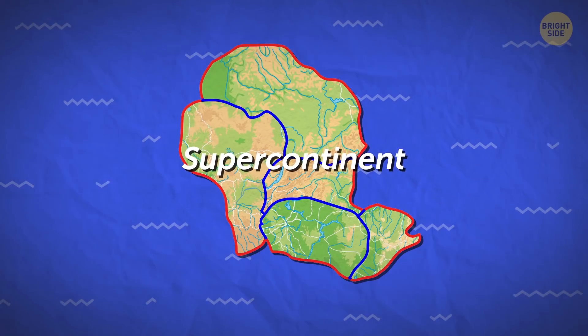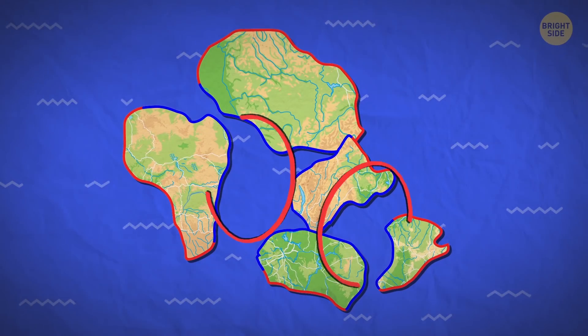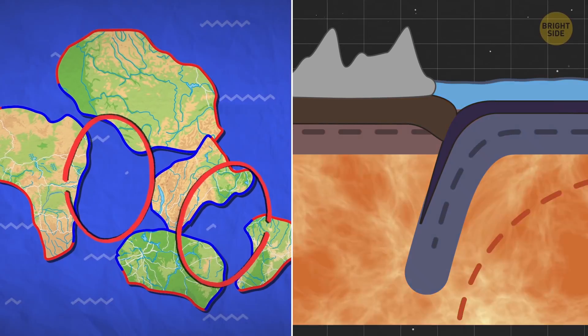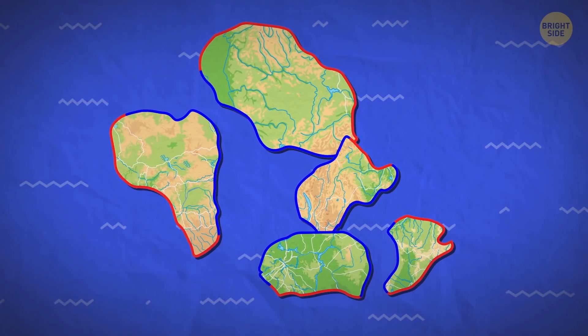At first, the supercontinent starts to separate, so water begins to flow through it and an internal ocean is formed. But the subduction zone doesn't appear there. It shows up in the superocean around the separating landmass.